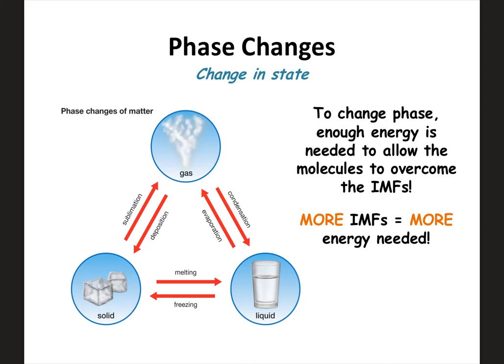If you're trying to go from the gas phase to the liquid phase, energy is actually going to be given off as the IMFs form. Same thing if you're going from a liquid to a solid — energy is going to be given off as those IMFs form. But if you want to go from a solid to a liquid, you're breaking some of the IMFs. If you want to go from a liquid to a gas, you're breaking all of the IMFs. So just keep in mind that the stronger or more numerous the IMFs, the more energy it's going to take to change phase.